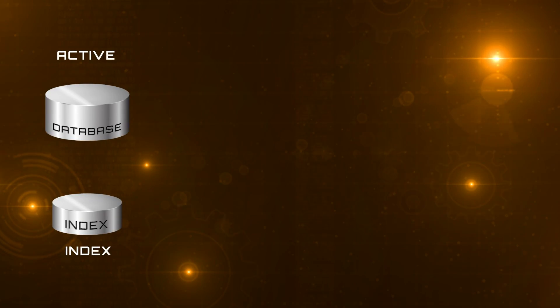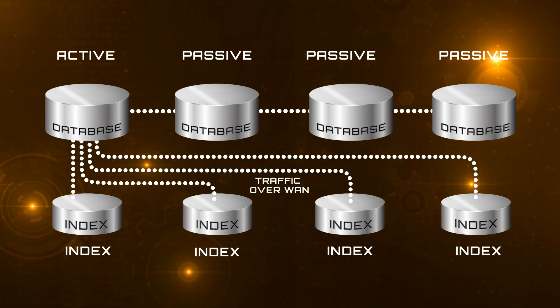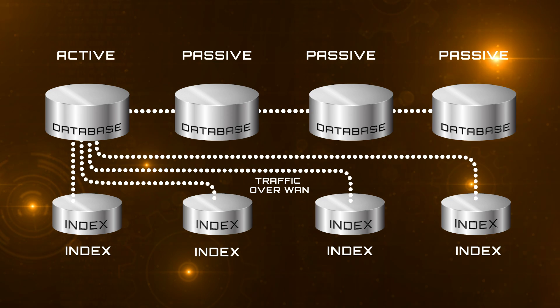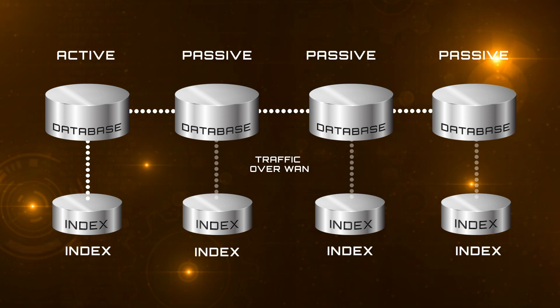Beyond simplification and reliability, related to log shipping and databases within a DAG, we've made a change that's been requested for several versions: how we create our indexes. On a passive copy of the database, we previously always created our search index from the active copy, in many cases across the WAN. Now we're actually creating the search index against the passive copy of the data, which lowers TCO. We hope there'll be a lot of happy admins from this change.